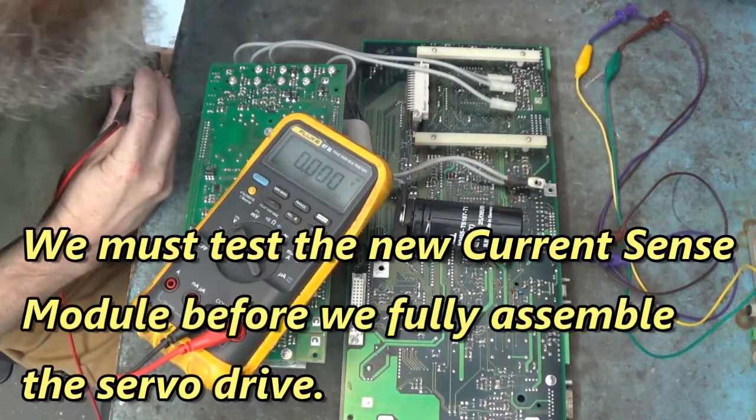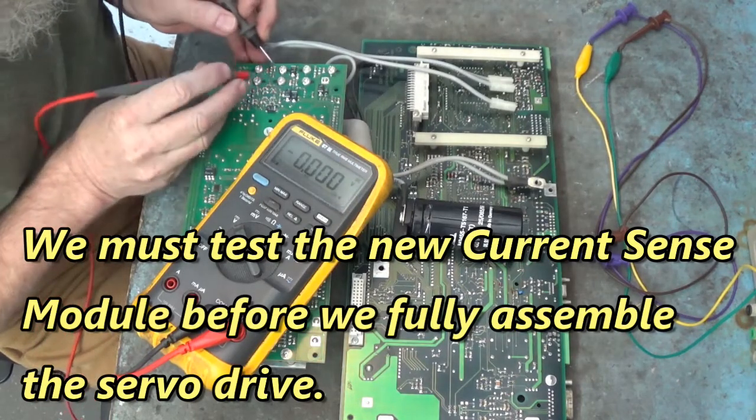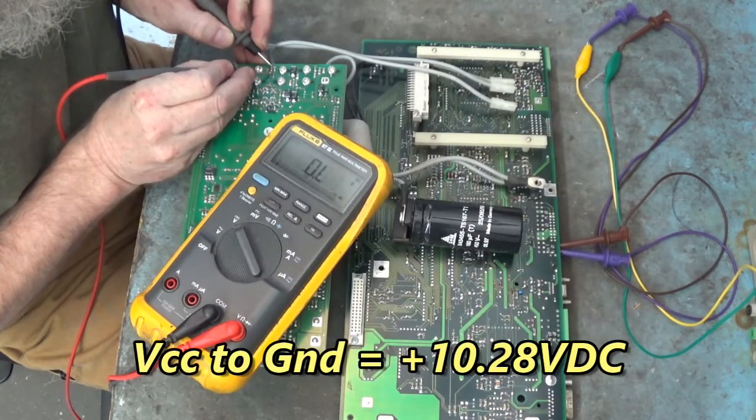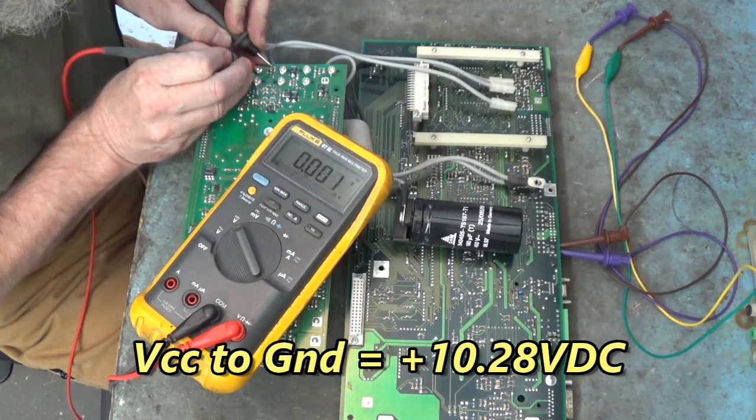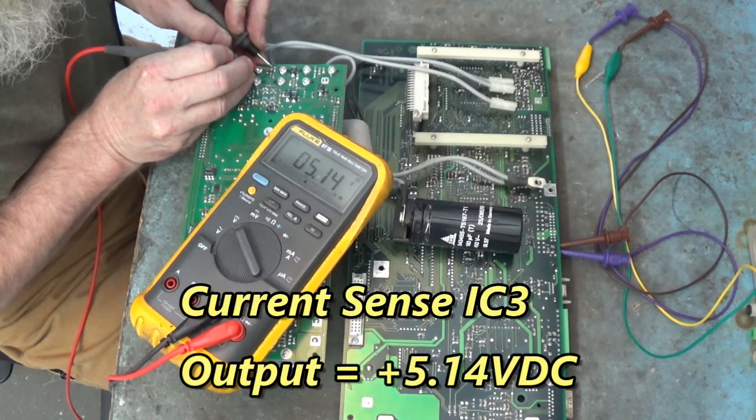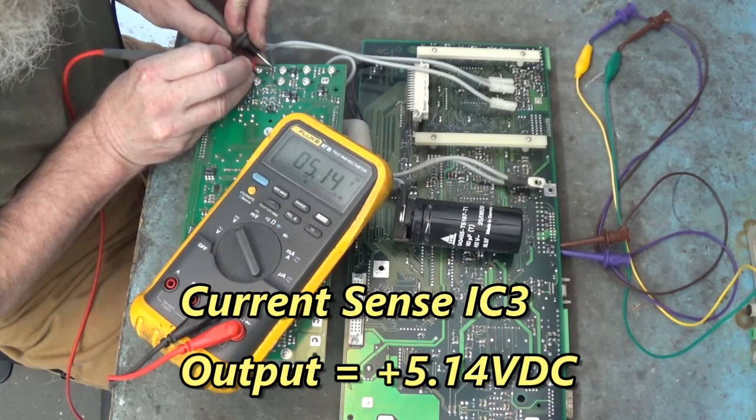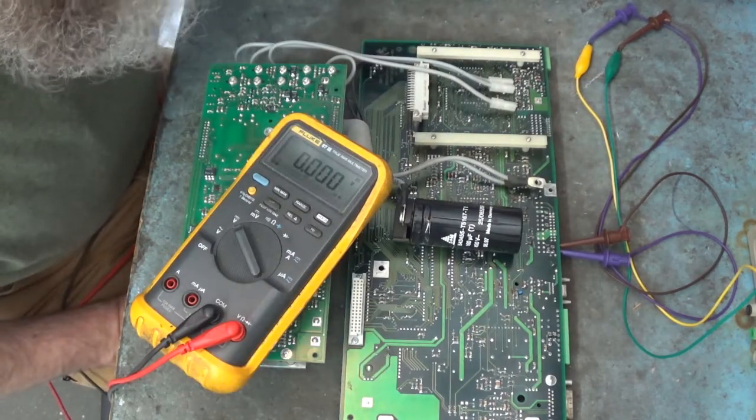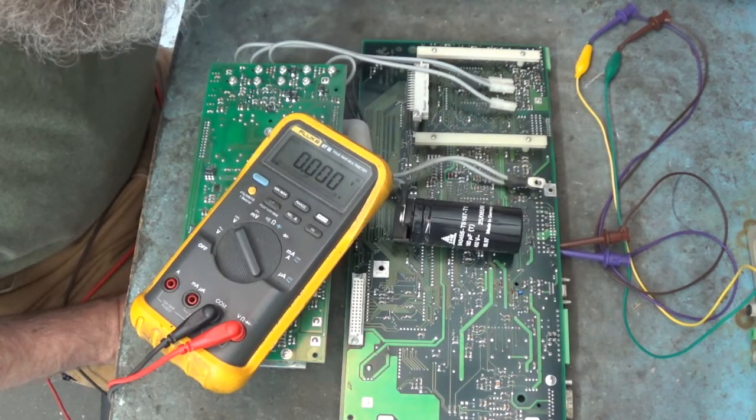Now we're going to look at that current sense output. It should be 5, not 9. There's our VCC to ground, 10.28 volts DC. Here's the output. 5.14 volts DC. It's not 9 volts anymore. We'll put the drive back together. See if it boots up good. See if we fix that alarm 61 fault.